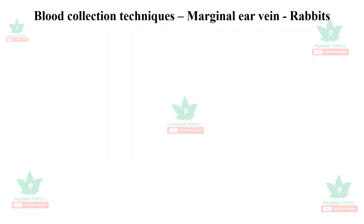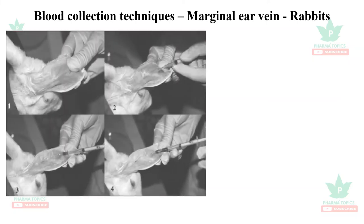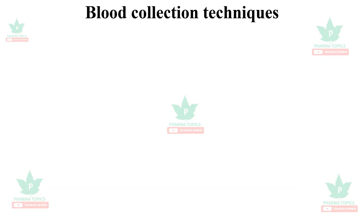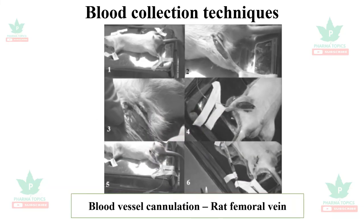The marginal ear vein technique involves shaving the ear and collecting blood from the visible vein; this is used for rabbits. Blood vessel cannulation — such as rat femoral vein cannulation — is used when repeated kinetic studies or repeated blood collection is needed.